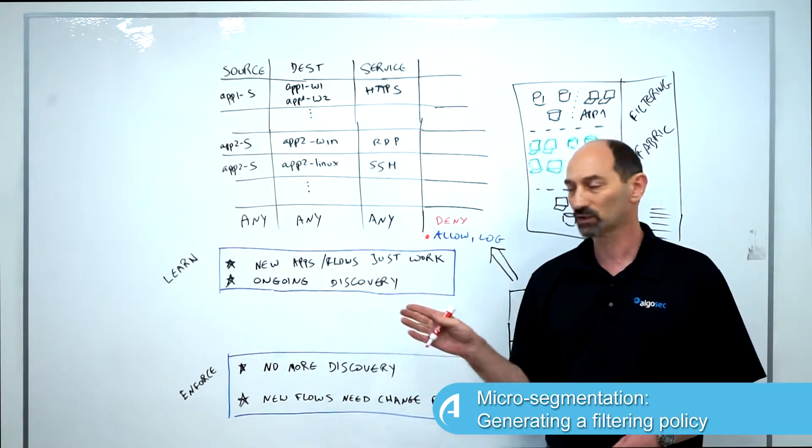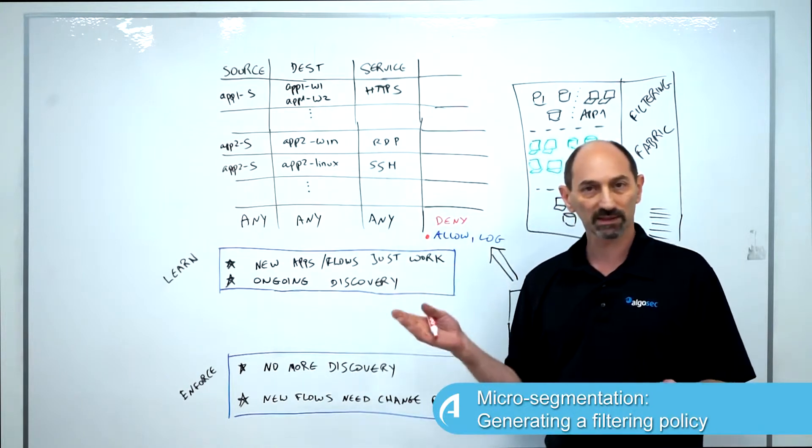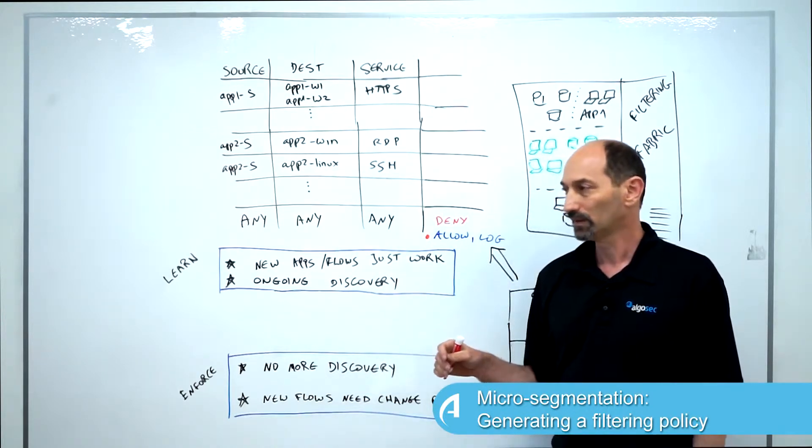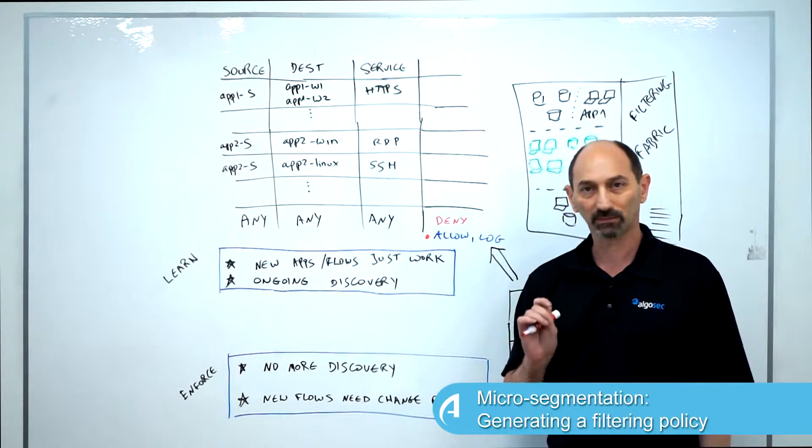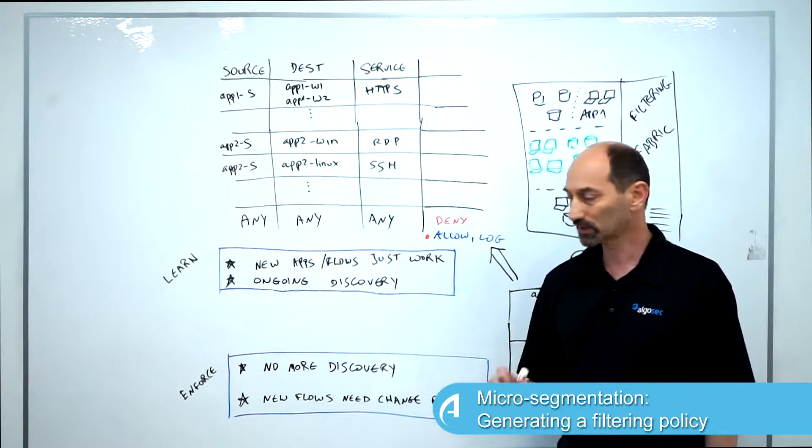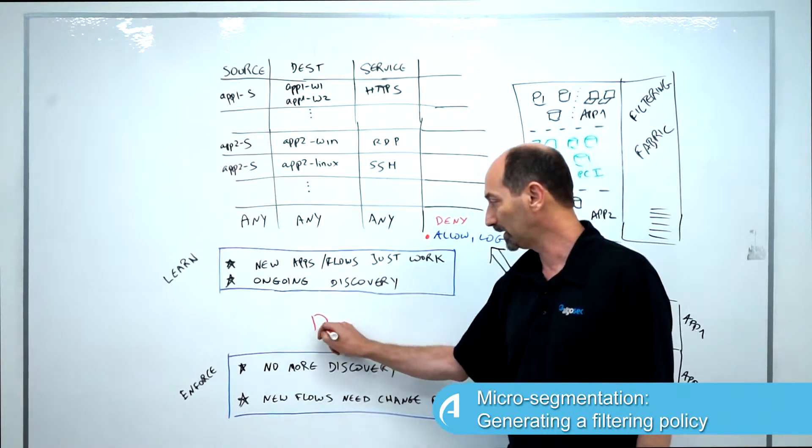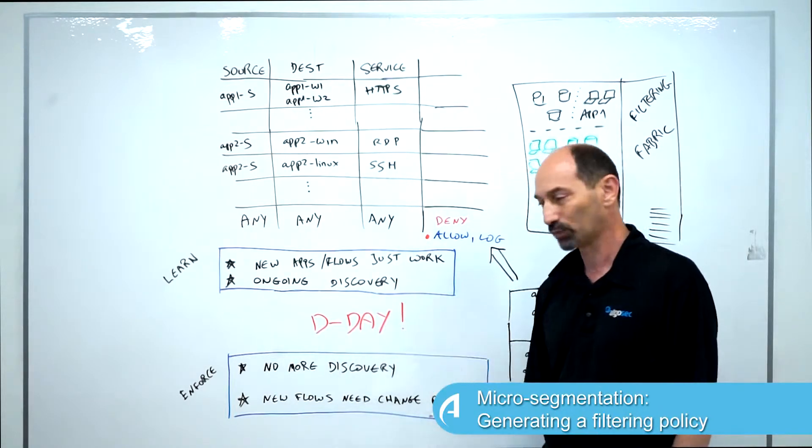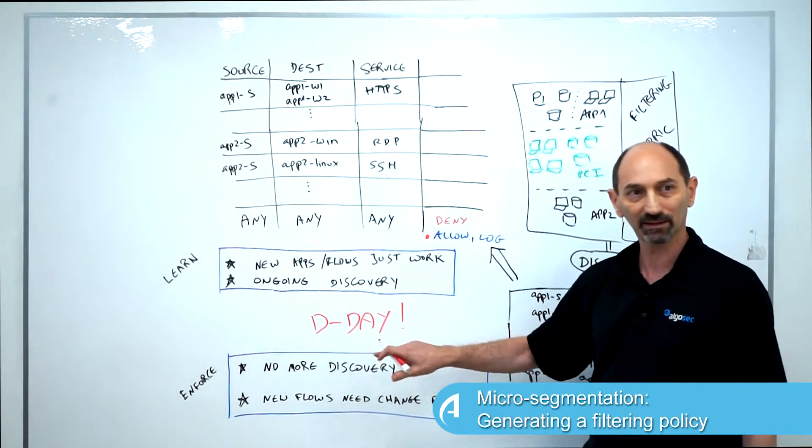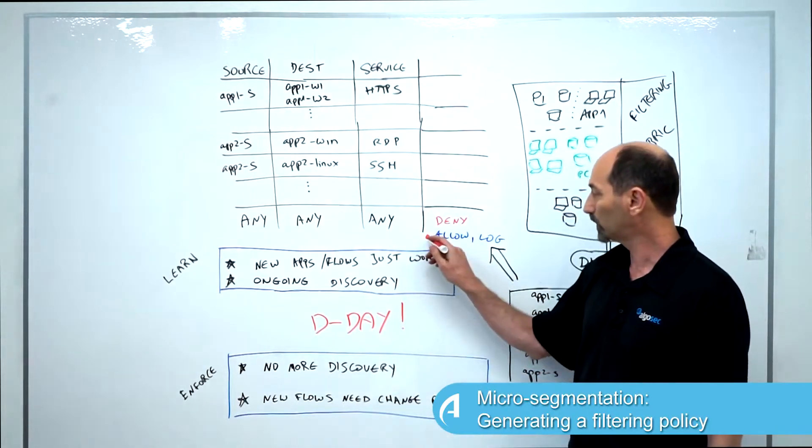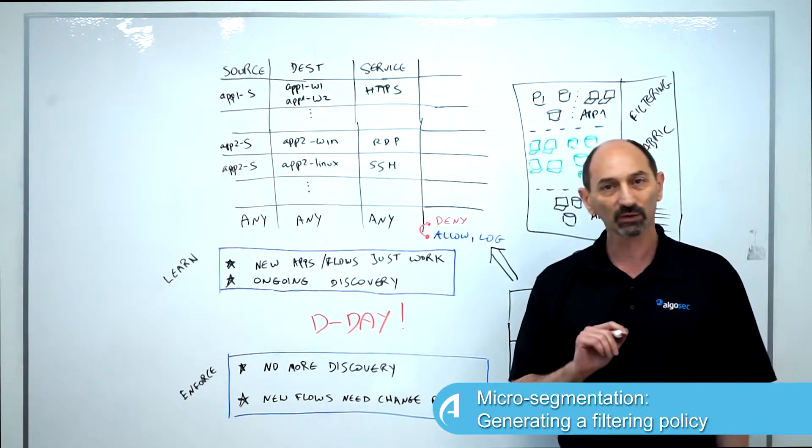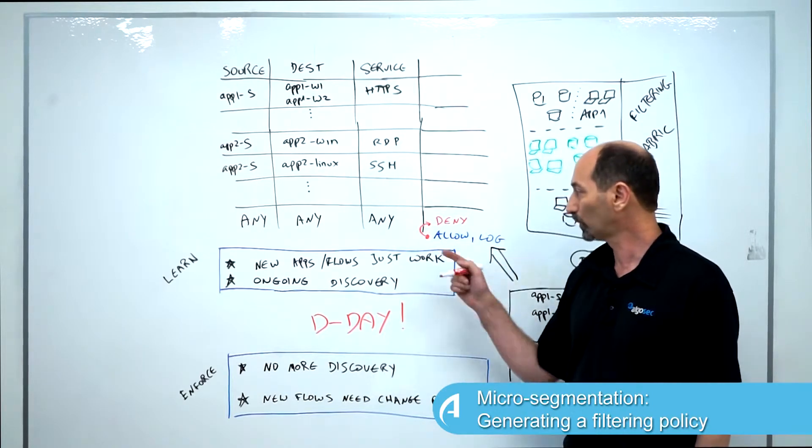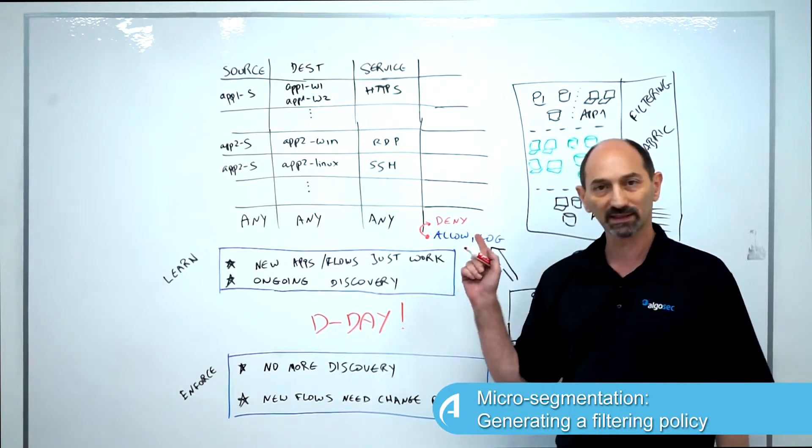Once that happens, you reach a stage where this final rule is quiet. Then you get to a very important milestone in the project, which is what I call D-Day. And D-Day stands for Deny Day. This is the day in which you switch the final rule from being an allow rule to a rule that says deny.